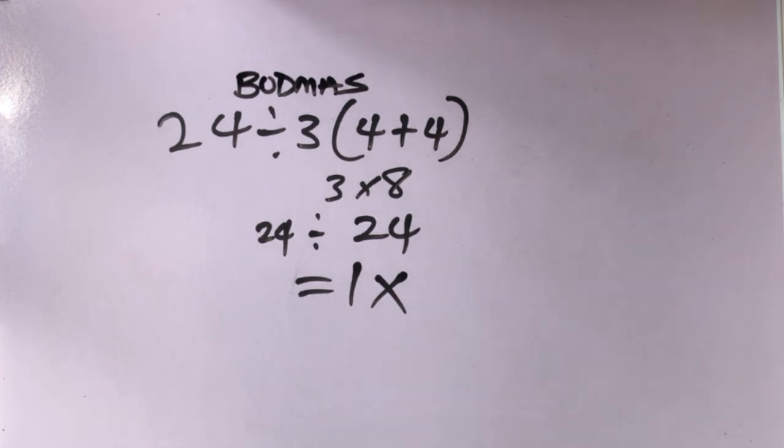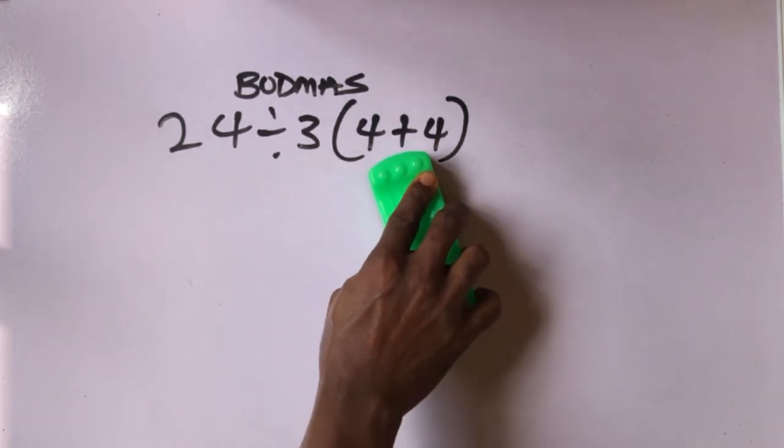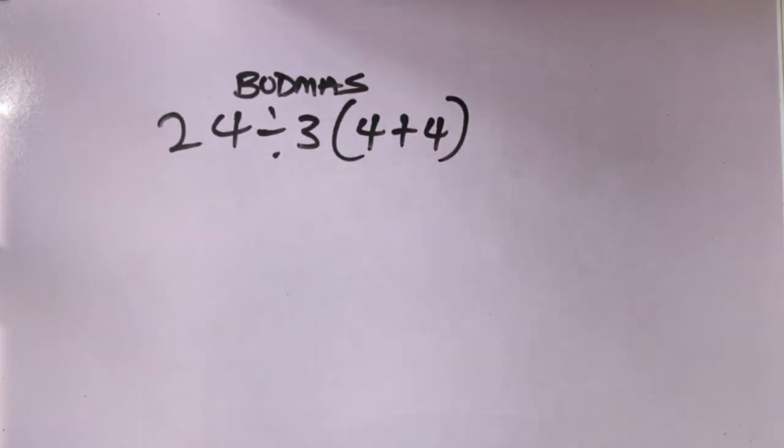We have to first of all solve the bracket, what is inside the bracket, followed by division, multiplication, addition before subtraction. So I'll clean this, I will solve it properly.